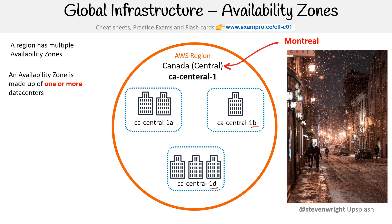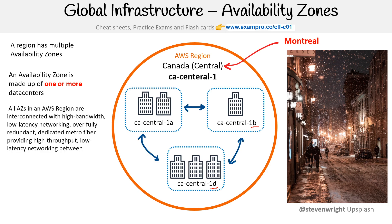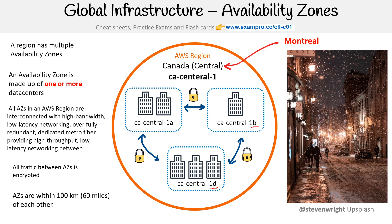Within your availability zones, they are made up of one or more data centers. Just understand that an AZ is not a single data center, but could be a collection of buildings. These AZs are interconnected with high bandwidth, low latency networking — fully redundant, dedicated Metro fiber, providing high throughput. All traffic between AZs is encrypted, and these AZs are within 100 kilometers, or about 60 miles, of each other.